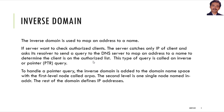The inverse domain is used to map an address to a name. If a server wants to check an authorized client which has only the IP of the client, it asks its resolver to send a query to the DNS server to map an IP address to a name to determine the client is on the authorized list. This type of query is called inverse or pointer query.